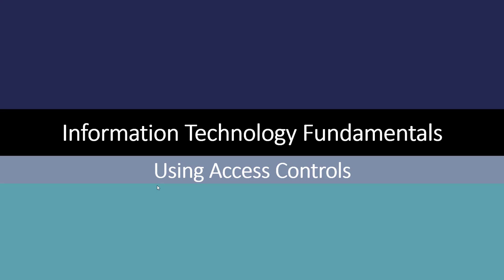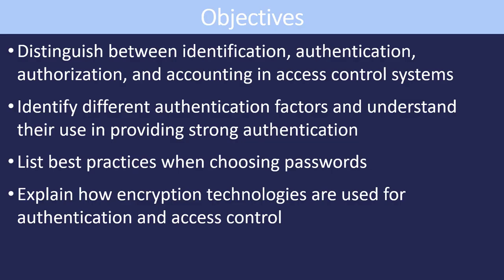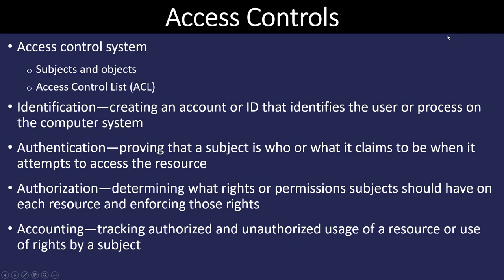Hello and welcome back to Information Technology Fundamentals. In this lecture we're going to review the use of access controls to help us secure our environment. We're going to distinguish between identification, authentication, authorization, and accounting in our control systems. We're going to look at the different types of authentication and how to use them to provide strong authentication. We're going to look at the best practices for choosing passwords. And lastly we're going to look at encryption technology and how they're used for authentication and access control.